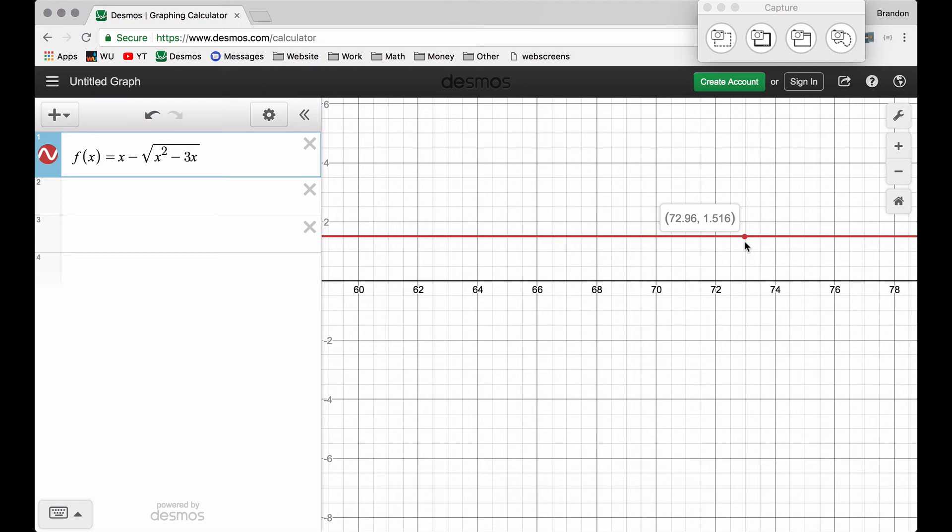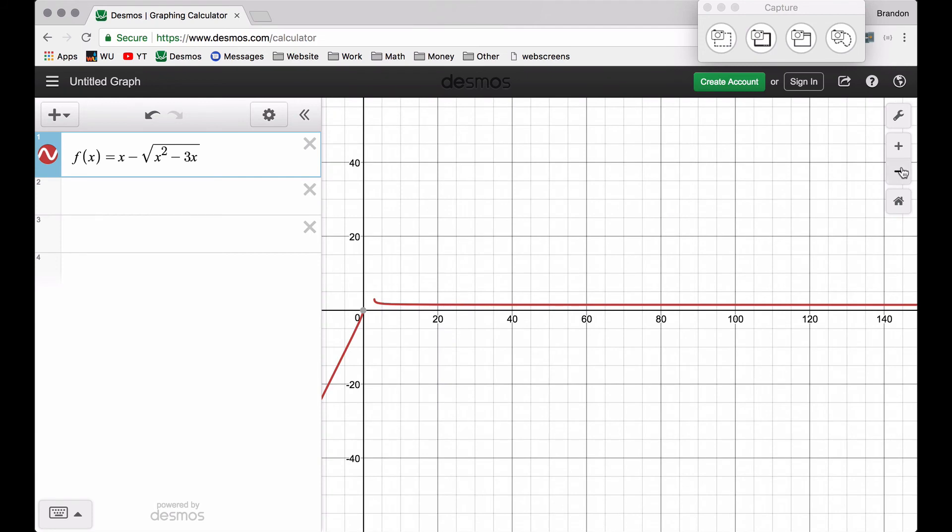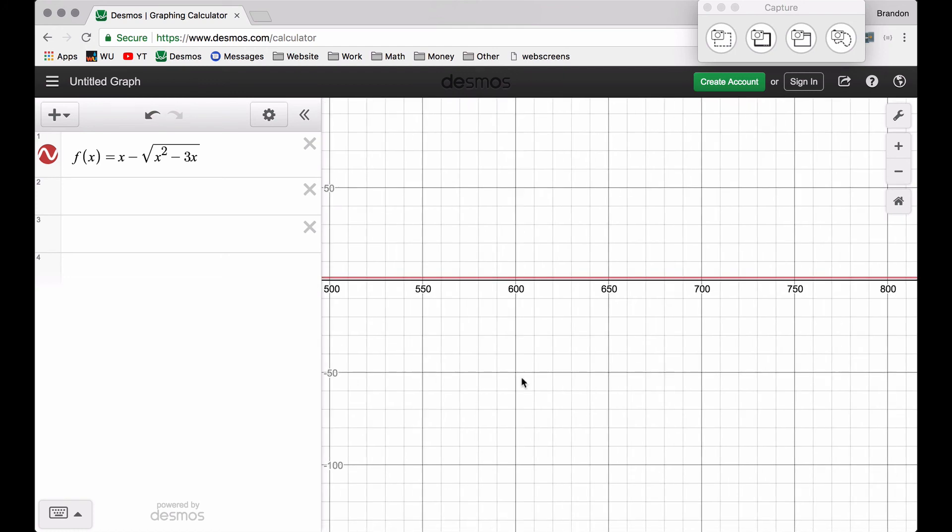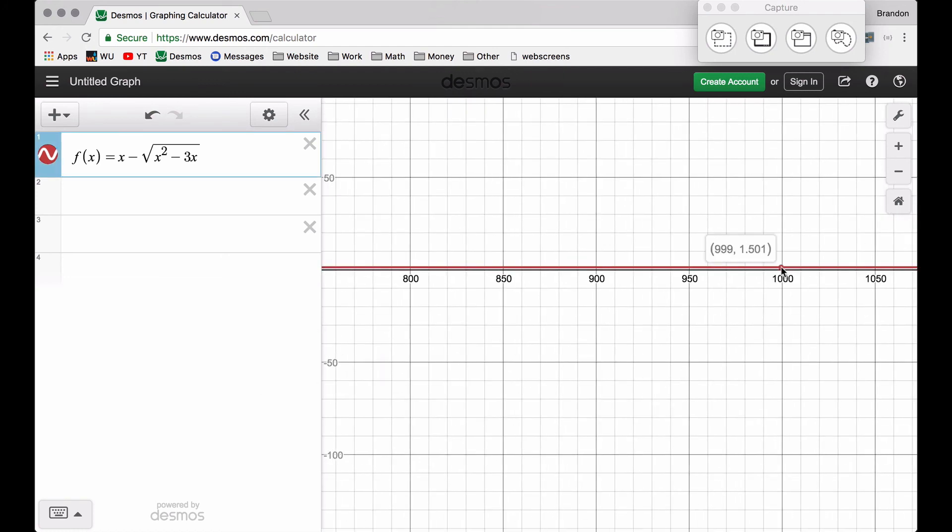Right now, we see 1.516. I'm going to zoom way out, and I'm going to let x get somewhere around 250. Look at the value of y now, 1.505. So as x gets really big, just by me doing this here, if I go out here to 1,000, look at the value of y now, 1.501.